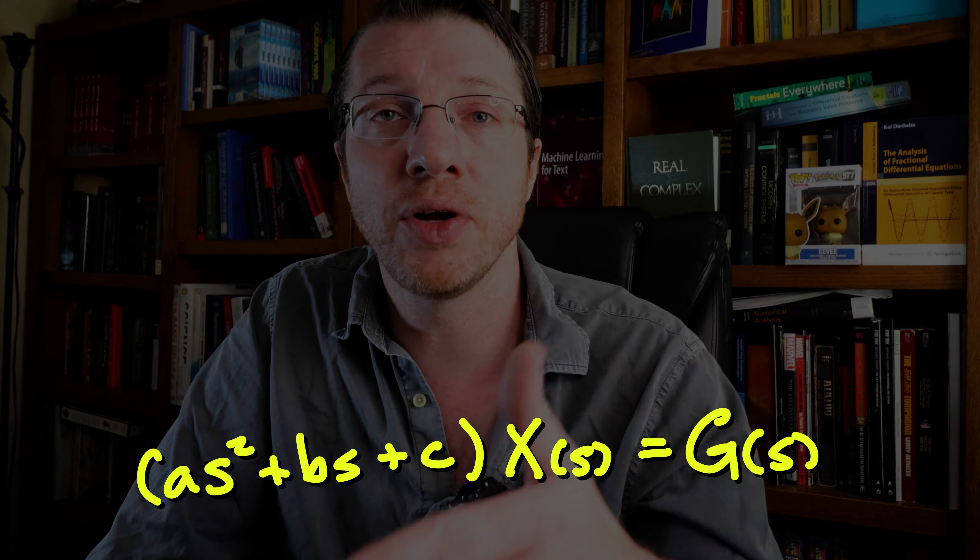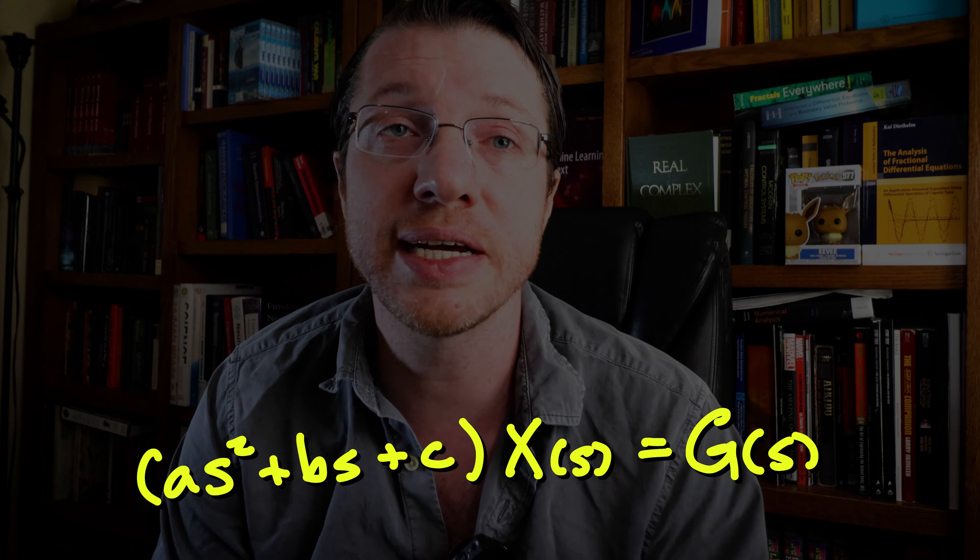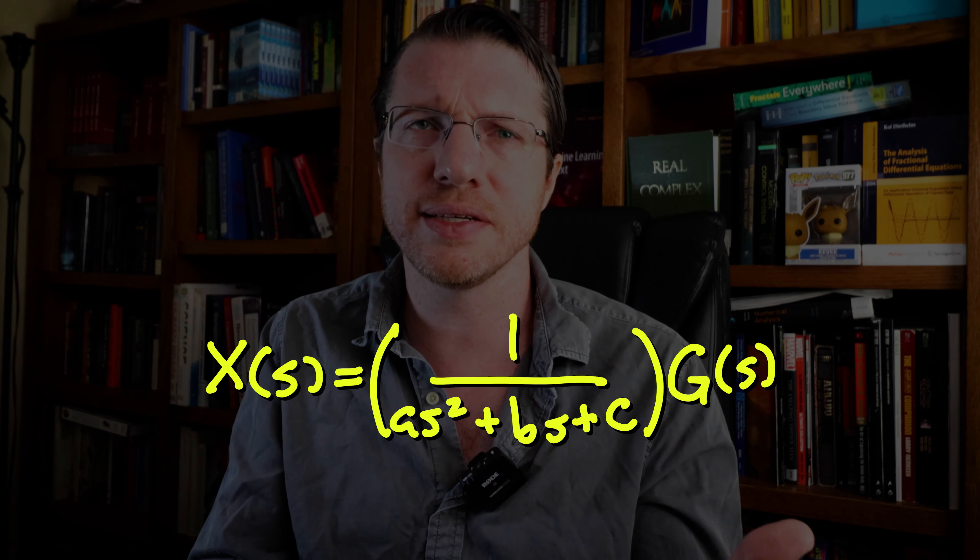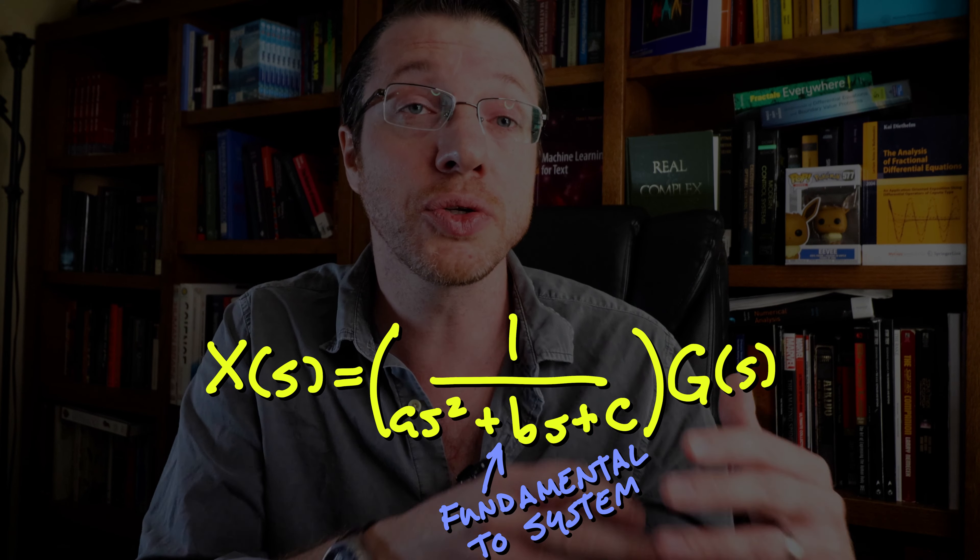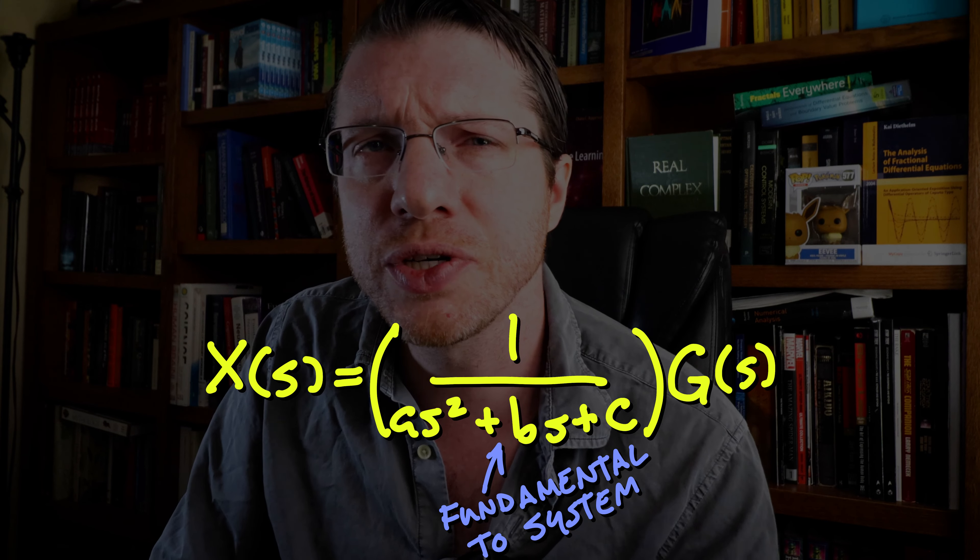So the Laplace transform gives us a quadratic polynomial times x of s is equal to g of s. Solving for x of s, we get this. Now we have two pieces here. One is actually fundamental to our system, this rational function here, and we have this g of s which comes from our input.